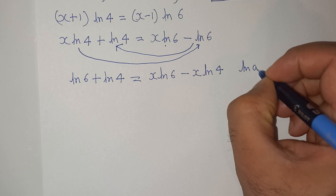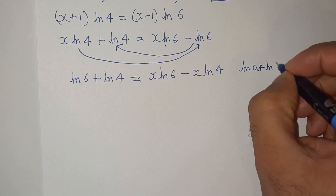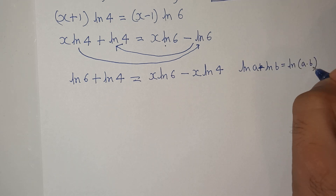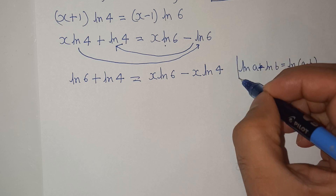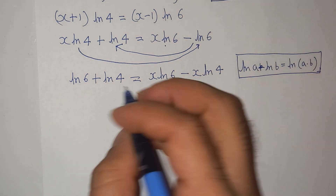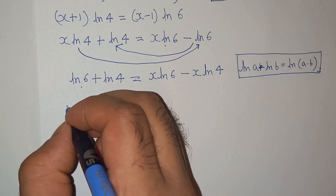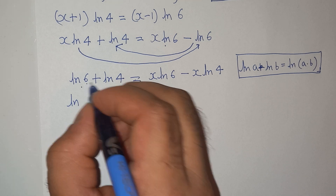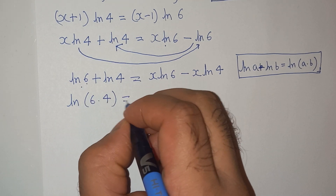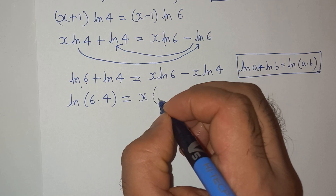Now we know this logarithm rule: log a plus log b equals log(a·b). We will use this logarithm rule here, so log 6 plus log 4 becomes log(6×4), which is log 24.